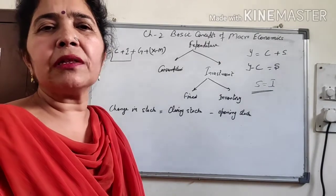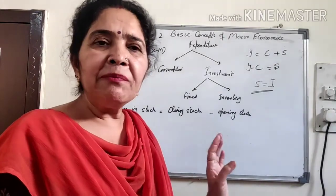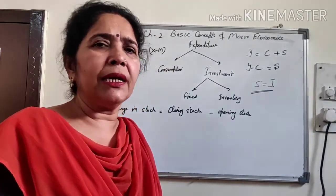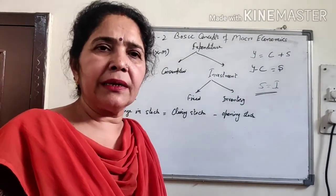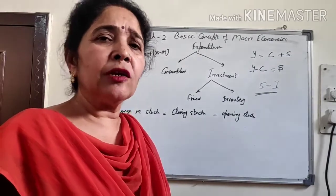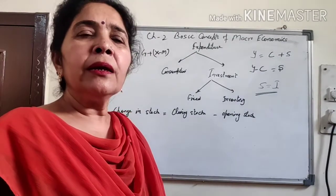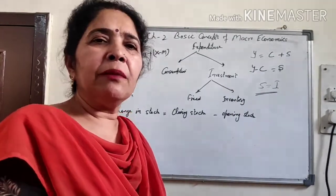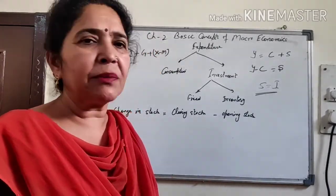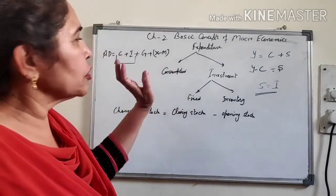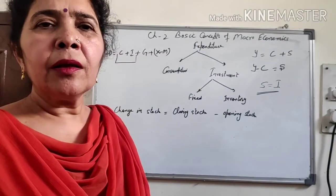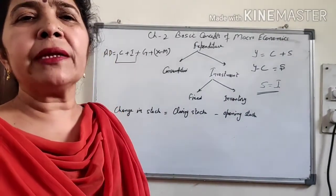Goods going into further production process — their value will definitely be included in national income. Final goods are part of national income. But intermediate goods, which go for further production, if included would cause the problem of double counting — meaning we would be adding the value twice: once in intermediate form and again in the final good. So we include only final goods in national income and exclude intermediate goods. Besides intermediate goods, we also need to distinguish between consumer goods and capital goods, which we will cover in the next video.